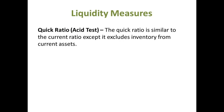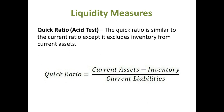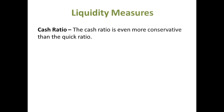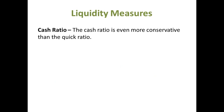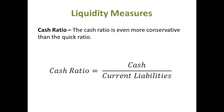The quick ratio, or acid test, is similar to the current ratio except it excludes inventory, because inventory is not as liquid as other items such as cash. The purpose of the quick ratio is to measure whether or not a company could pay off its current liabilities if they were to come due today. It is calculated as current assets minus inventory over current liabilities. The cash ratio is an even more conservative ratio than the quick ratio, and it measures cash over current liabilities. A short-term creditor may be extremely interested in this ratio.